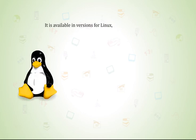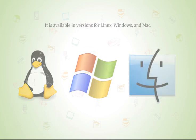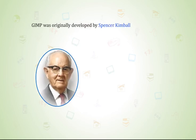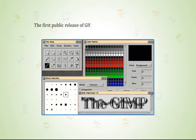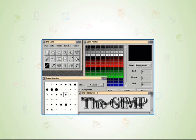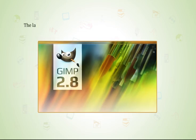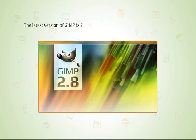It is available in versions for Linux, Windows, and Mac. GIMP was originally developed by Spencer Kimball and Peter Mattis. The first public release of GIMP, version 0.54, was made in January 1996. It has been regularly updated ever since. The latest version of GIMP is 2.8.14, which was released on August 26, 2014.